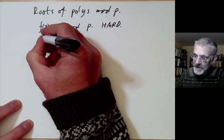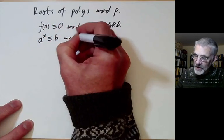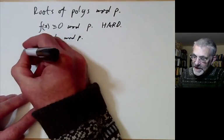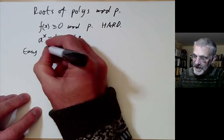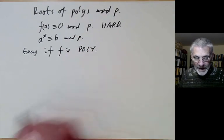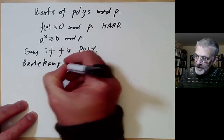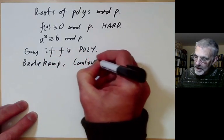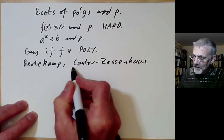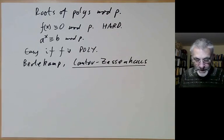For example, if you want to solve the discrete logarithm problem — a to the power of x congruent to b modulo p — there doesn't seem to be any particularly easy way of doing this. However, it's easy for special functions; it's easy if f is a polynomial. There are several ways of doing this: one found by Berlekamp, and another found by Cantor and Zassenhaus.